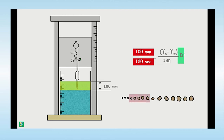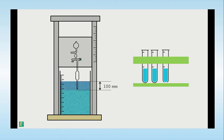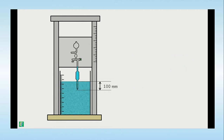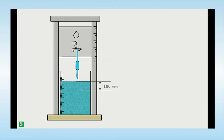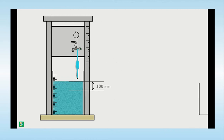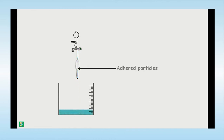Since we know the viscosity and the density of the settling particles and the medium, we are able to find out the diameter of the particle. The samples taken from the Anderson pipette are transferred into a measuring vessel.